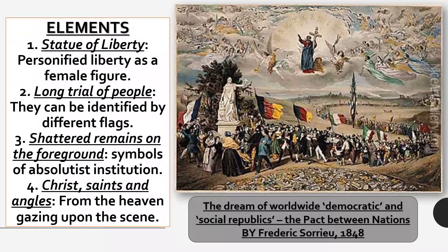The second element we can find is the long trail of people — a long queue of people carrying different flags. We can identify them with the help of different flags, like Germany, France, and Switzerland. The third element is the shattered remains in the foreground — the remains of the absolutist institutions. Absolutist institution means a government or system of rule that has no restraint on the power exercised — a kind of institution over which people have no control.